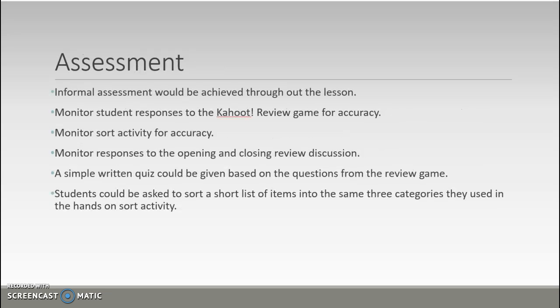Assessment: Informal assessment is achieved throughout the lesson. Monitor student responses to the Kahoot review game for accuracy and go around during the word sort to help students make corrections. Monitor responses during the opening and closing review discussion, having students list facts they've learned. A simple written quiz based on the review game questions can be used, and students could sort a list of items into transparent, translucent, and opaque categories as a quick exit ticket.